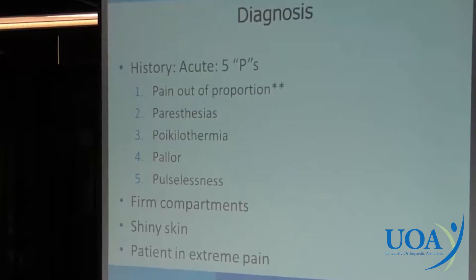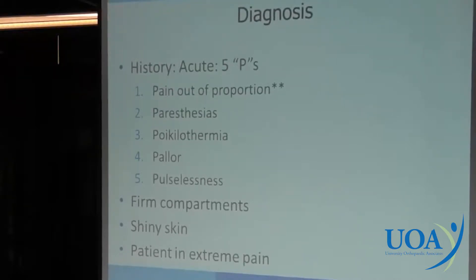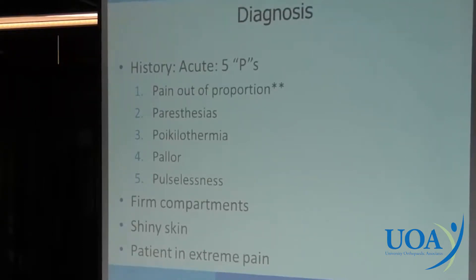In terms of acute compartment syndrome, we talk about the five Ps. When you have an acute traumatic compartment syndrome, you can't even touch these patients — they're screaming and jump off the table when you try to ankle dorsiflex or plantar flex them. It's a very easy diagnosis in the traumatic world. They have paresthesias — radiating-type pains — poikilothermia with a cold foot, pallor, and finally pulselessness. Once you get to no pulses in the acute world, it's too late — the muscles are probably dead already. You have very firm compartments, shiny skin, and the patient is in extreme pain.